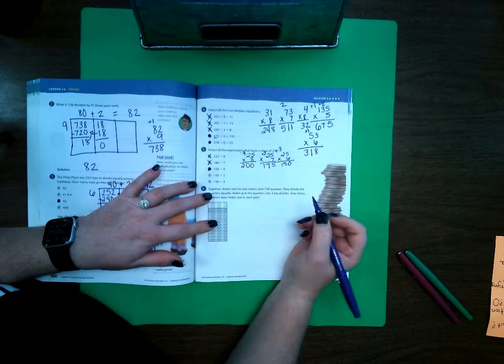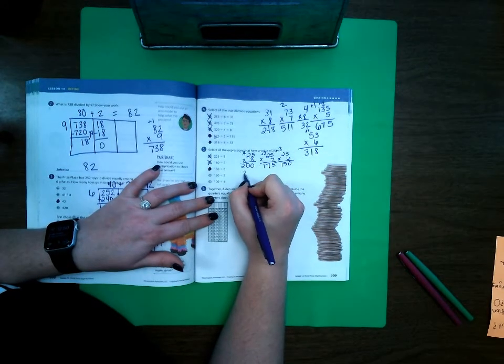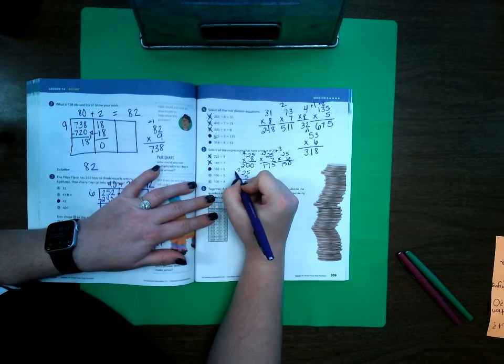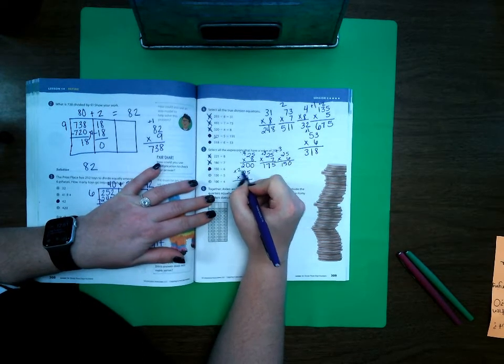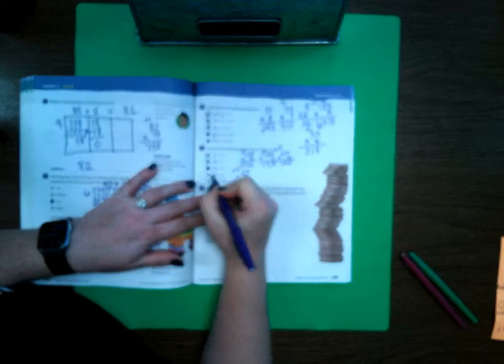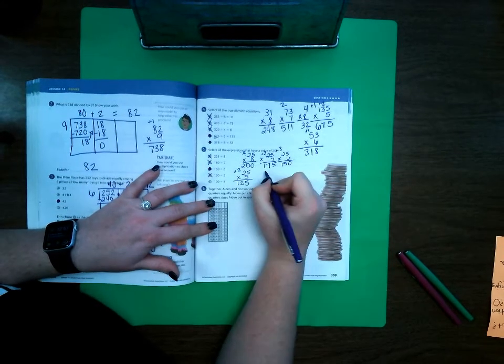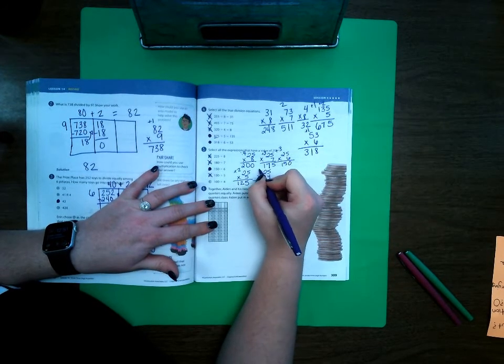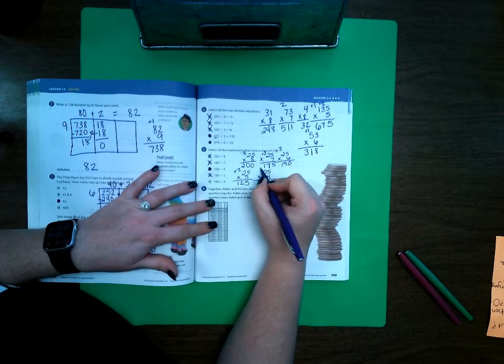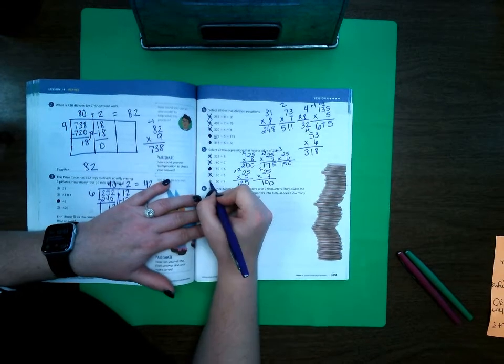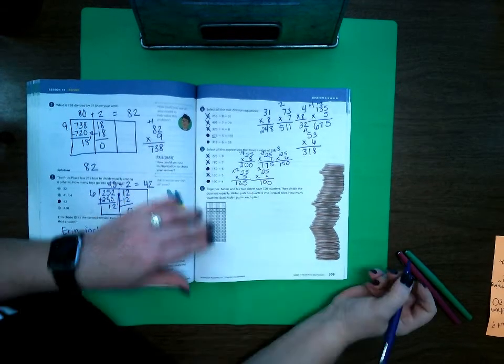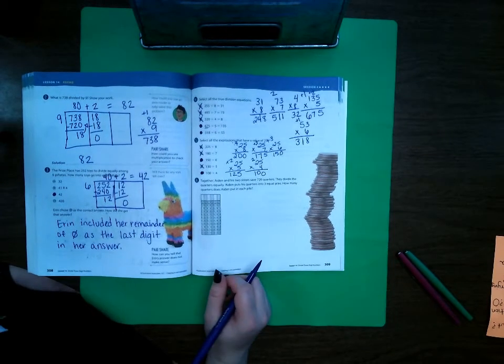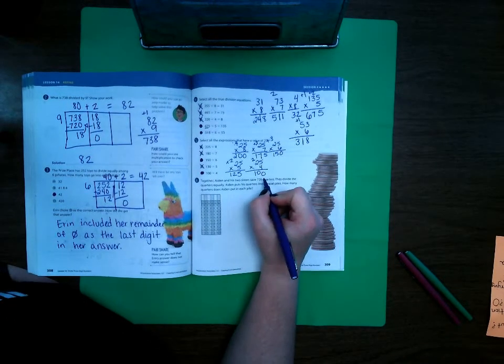25 times 5, 5 times 5 is 25, 5 times 2 is 10 plus 2 more is 12. That is not correct. And 25 times 4, 5 times 4 is 20, 4 times 2 is 8 plus 2 more is 100. So E is correct.